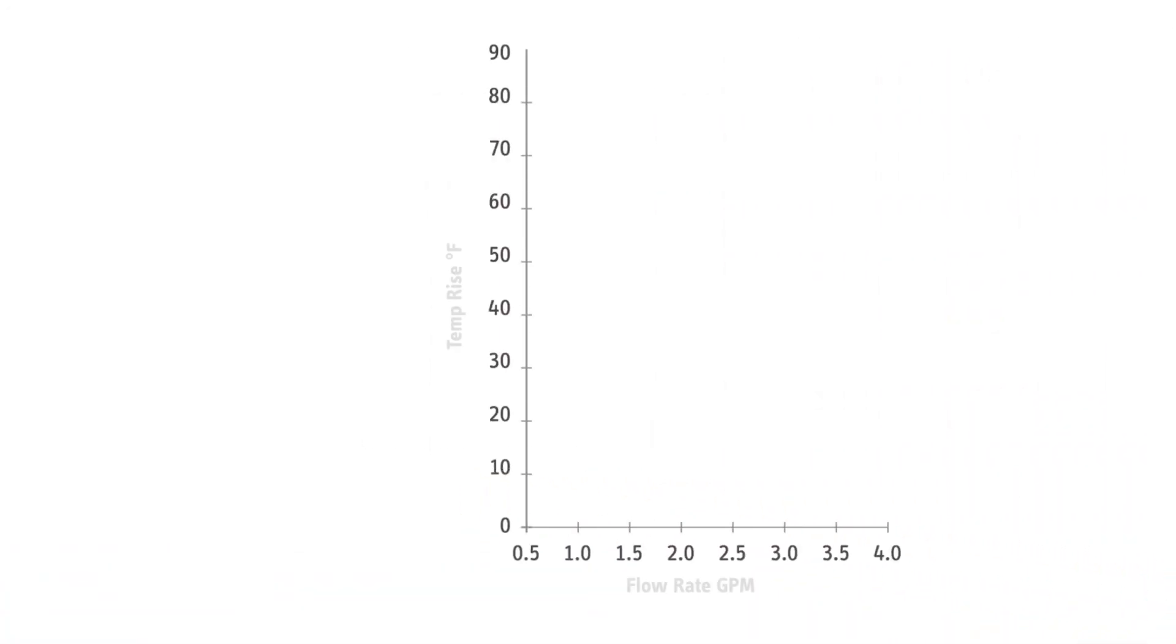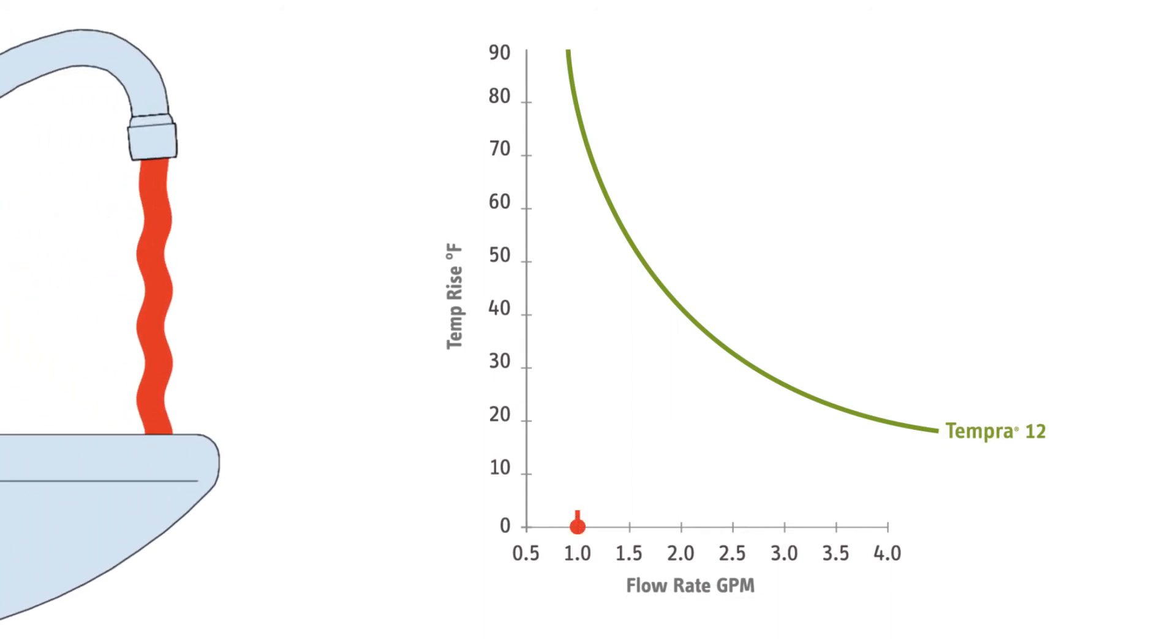For example, imagine a tankless water heater model that can raise the temperature of water almost 80 degrees at a flow rate of one gallon per minute. If the flow rate increases to two gallons per minute, that model will not be able to raise the water temperature that much. Or if the temperature rise needs to be greater than 80 degrees, then the flow rate will be less than one GPM.